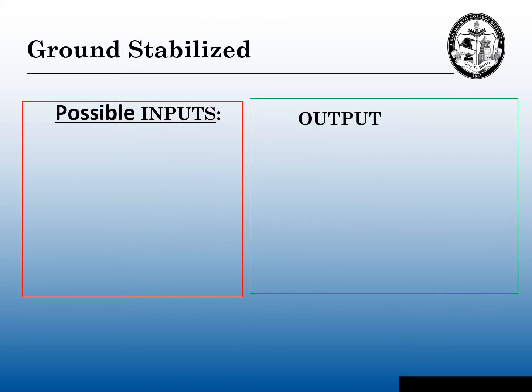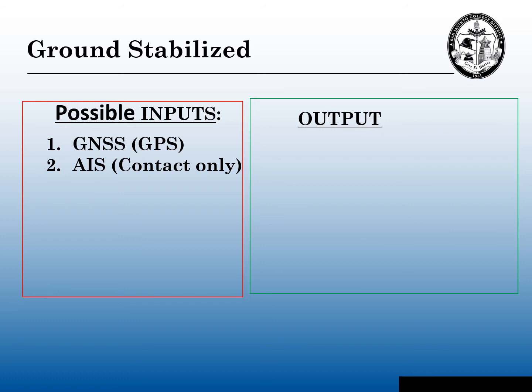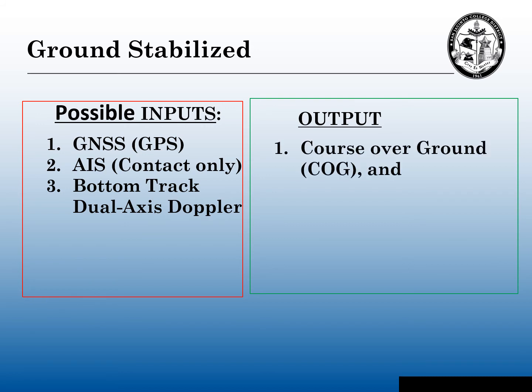For ground-stabilized radars, there are no required inputs, but possible inputs include a global navigation satellite system (GPS), AIS information — which is for contacts only and doesn't necessarily ground-stabilize the entire radar — or you could bottom-track your dual-axis Doppler. The outputs for GPS and bottom-track dual-axis Doppler give us course over ground (COG) and speed over ground (SOG).